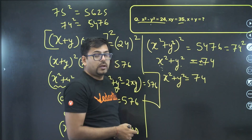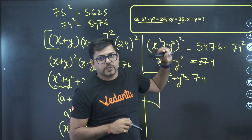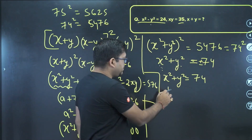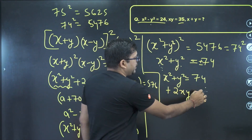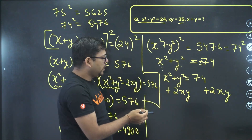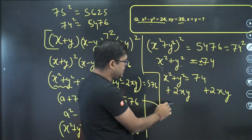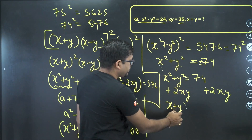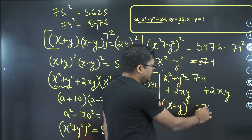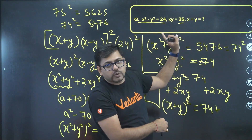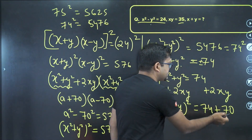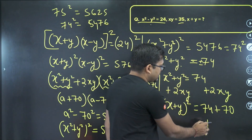We've been asked for x+y. To get that, I add 2xy to both sides: x²+y²+2xy equals 74 plus 2·xy. Since xy=35, that's 74 plus 70, which gives us 144. And x²+y²+2xy is undoubtedly (x+y)².